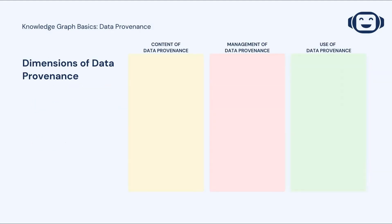On the screen now are some adapted dimensions of provenance detailed by the World Wide Web Consortium. Paraphrasing, three categories in which provenance is thought about include the content of provenance information, the management of provenance data, and how provenance is used.